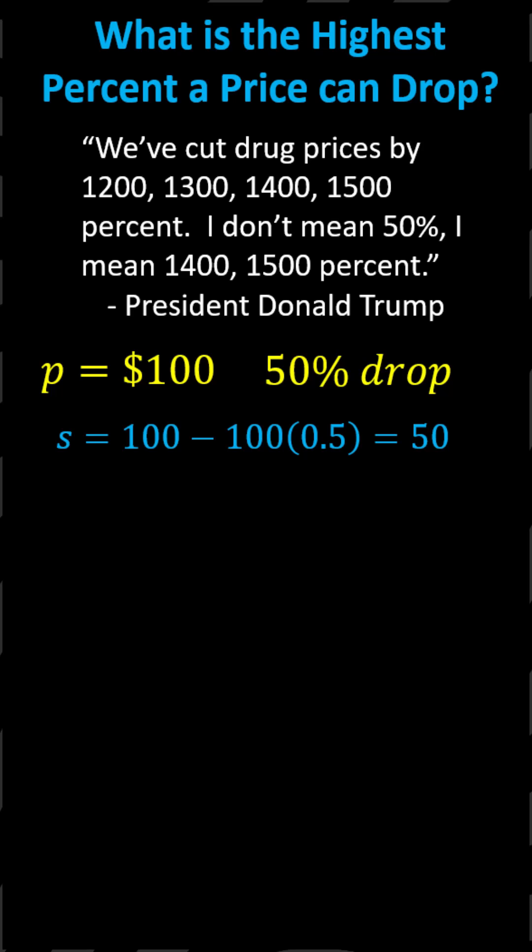If the drug price dropped 100%, notice the sale price would be $0, meaning the drug would be free. So the highest percent a price can drop is 100%, unless the sale price is negative, which means the drug company would be giving you money to take their drug.